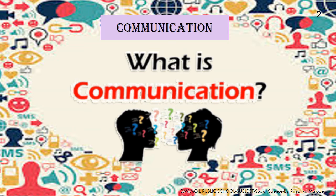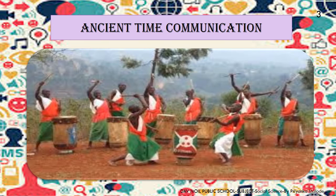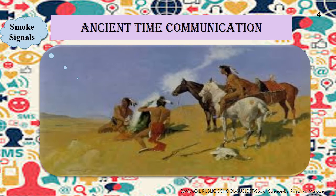Since long ago, we didn't have knowledge of words. So that time, how did we communicate with each other? This is the ancient time communication — drum beating. Students, do you know, man cannot live alone. He needs to communicate with others. The early man communicated with others by drum beating or smoke signal. They communicated with people by smoke signal or drum beating.